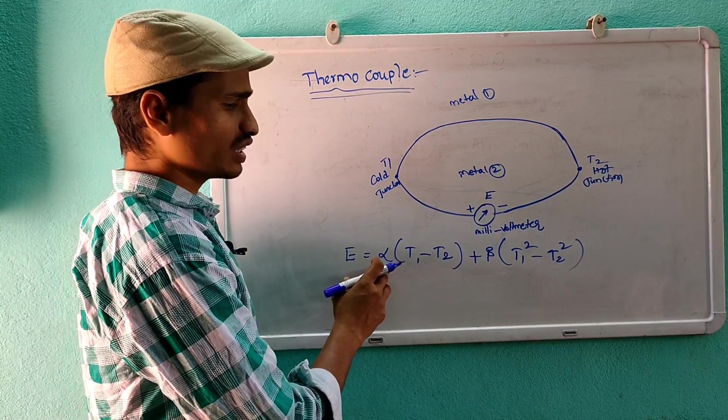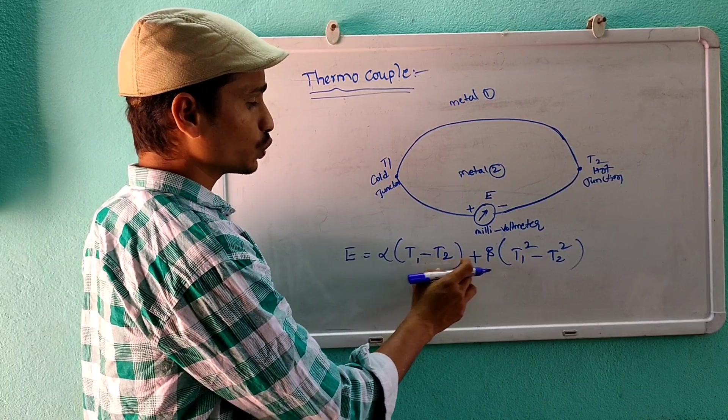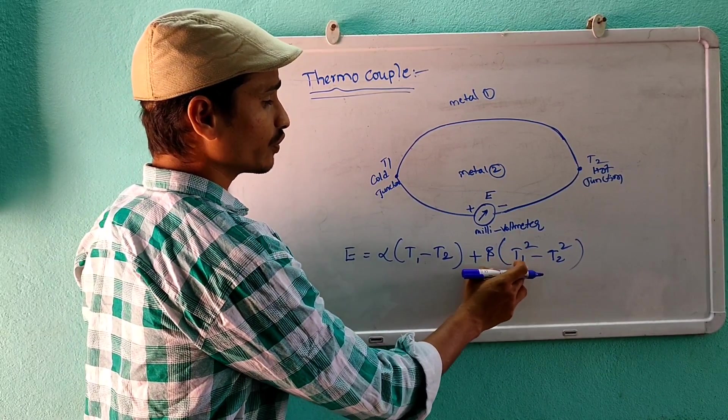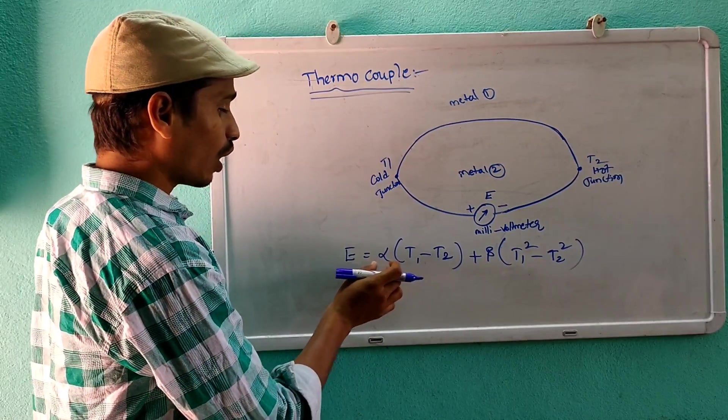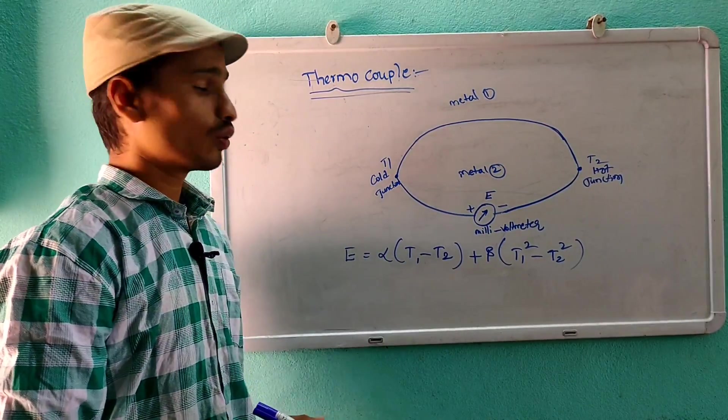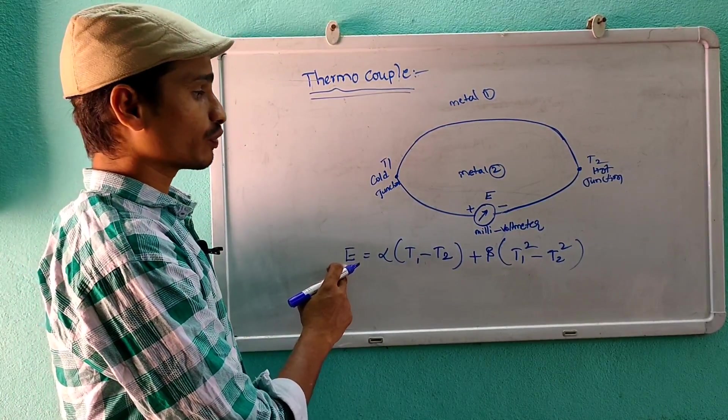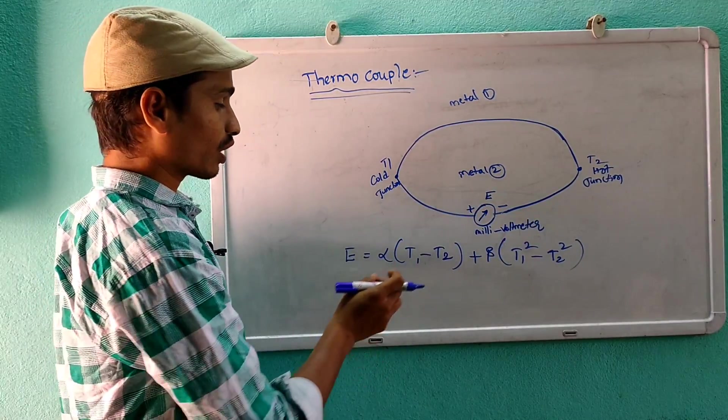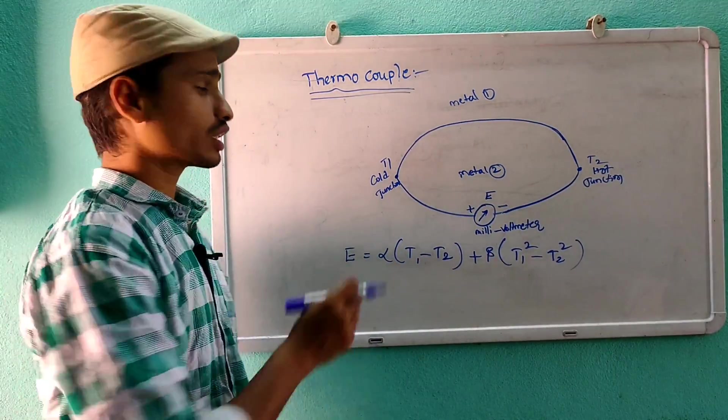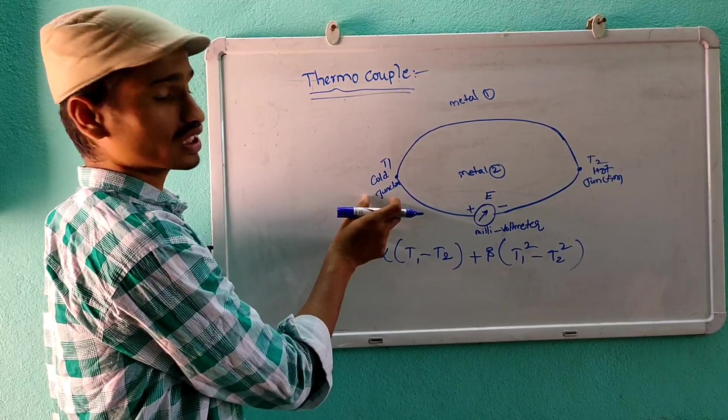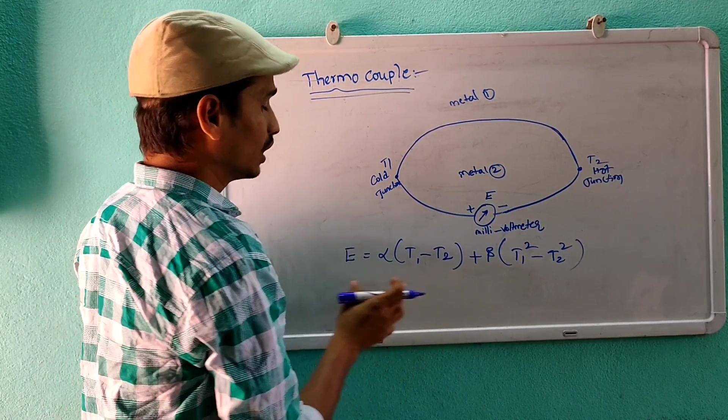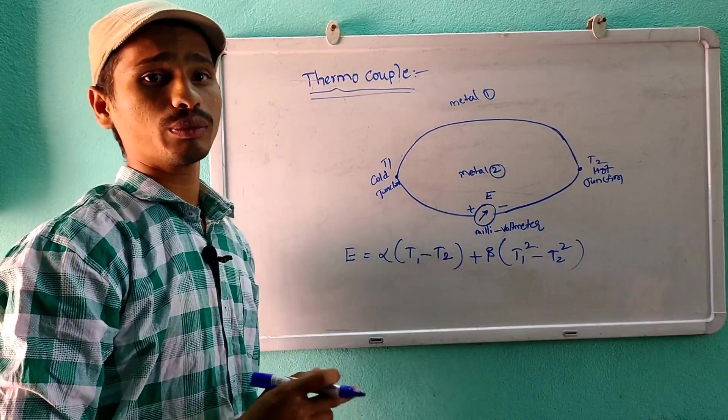E is equal to alpha into T1 minus T2 plus beta into T1 square minus T2 square, where alpha and beta are the constants. E is the generated EMF. T1 is the temperature at cold junction where T2 is the temperature at hot junction. This is the generated EMF equation.